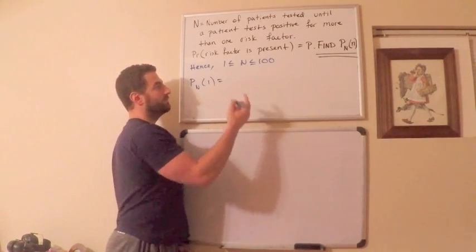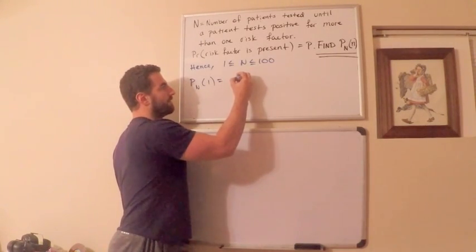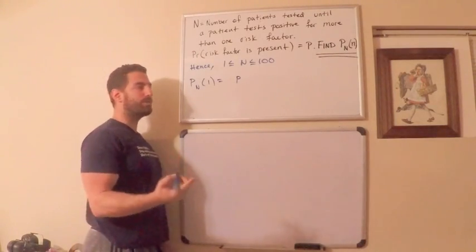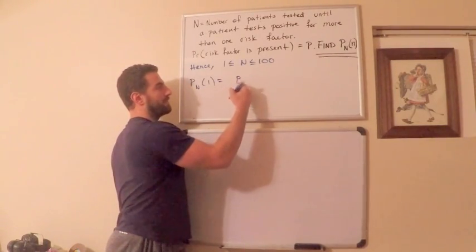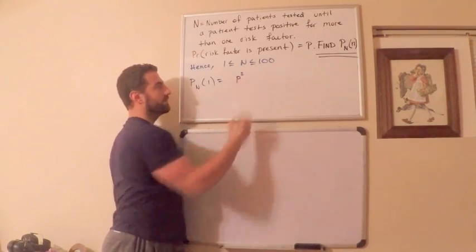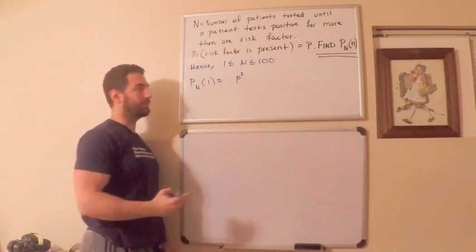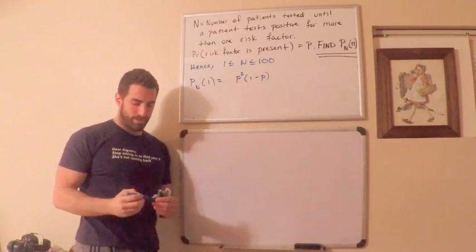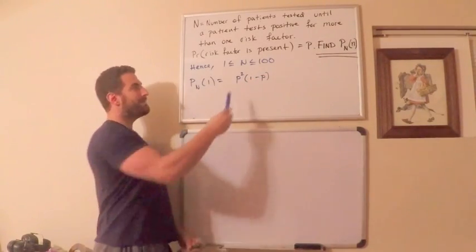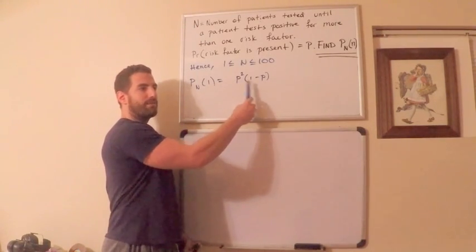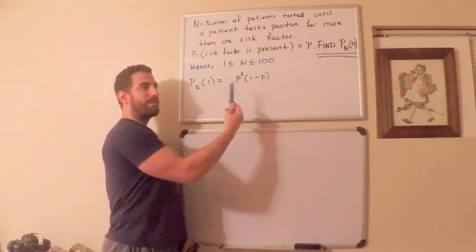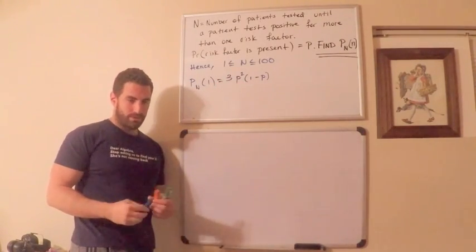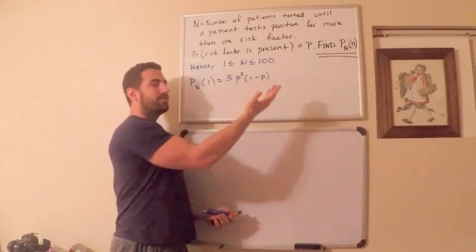If they have two of the three risk factors, that's p squared times (1 minus p). But how many ways can this happen? Maybe they have the first and second but not the third; maybe the first and third but not the second; or maybe the second and third but not the first. There are three ways, which you could write as 3 choose 2 (or 3 choose 1). So the probability of having exactly two of the three risk factors is 3p²(1-p).